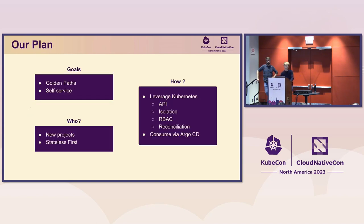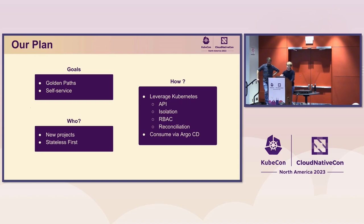Our plan was a platform approach: golden paths and self-service. How did we want to do it? Leverage Kubernetes, for the simple reason that it has great benefits — an extension model with the API, versioning by design, API discovery, a great isolation model with namespaces and authentication via RBAC.